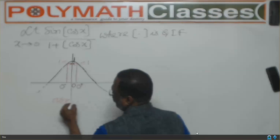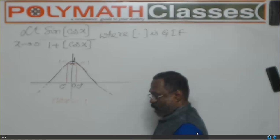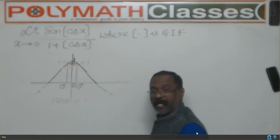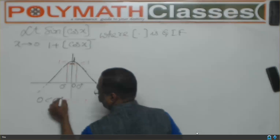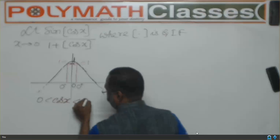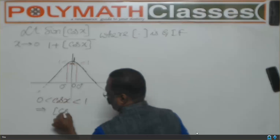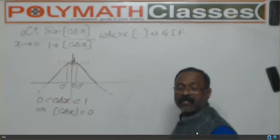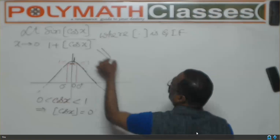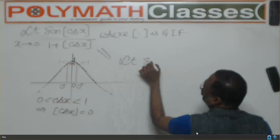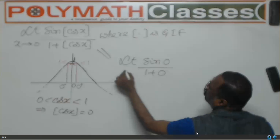So cos x lies between 0 and less than 1 in both cases. This implies step of cos x — that is, the greatest integer of cos x — obviously becomes 0. Thereby this limit becomes the limit of sin(0) upon 1 plus 0, as x tends to 0, which equals 0.